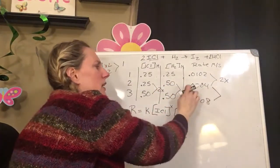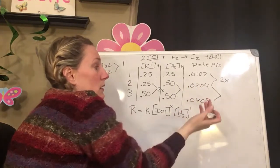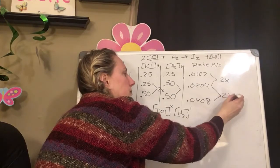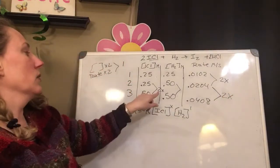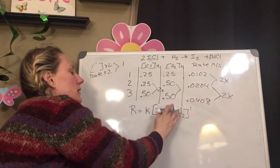What happens to my rate? It goes from 0.0204 to 0.0408, so that doubles too. So again, when my concentration doubles and my rate doubles, my exponent is going to be a 1.